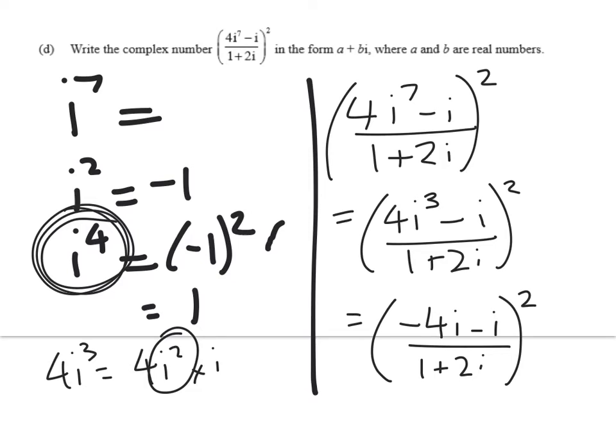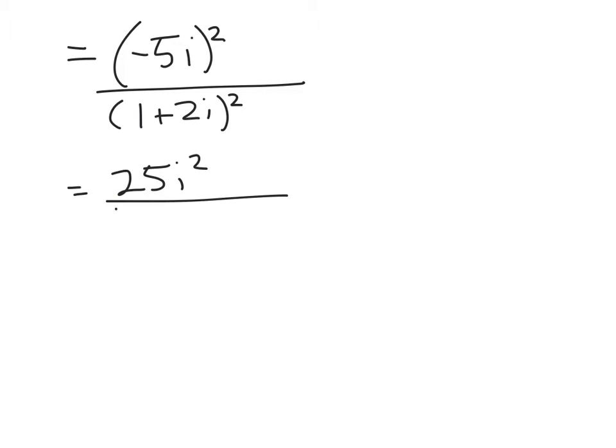So my numerator is now negative 4i minus i, which is just negative 5i squared, and the denominator is 1 plus 2i squared. So up the top we've got 25i squared over 1 plus 4i plus 4i squared. Now I'm writing out every full line here so that if you're watching and you're still finding these quite hard, you can see.